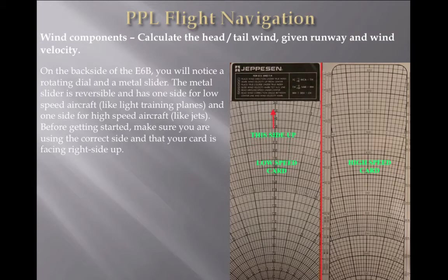On the back side of the E6B, you'll notice the rotating dial on the metal slider. The metal slider can be reversible. Some have calculations — the ASA's have all the calculations — including crosswind corrections, wind component grids, and off-course corrections. On the flip side it'll show you those radials, and at the very top, like this one does, course corrections and true corrections for ground speeds. So just make sure you know which way around it is.